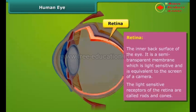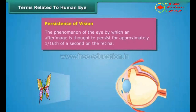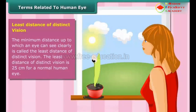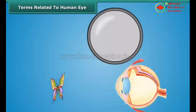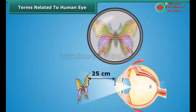Persistence of vision: The phenomenon of the eye by which an after-image is thought to persist for approximately one-sixteenth of a second on the retina. Least distance of distinct vision: The minimum distance up to which an eye can see clearly is called the least distance of distinct vision. For a normal human eye, this distance is 25 cm.